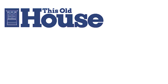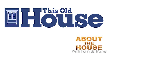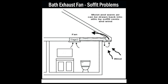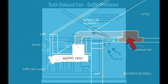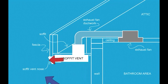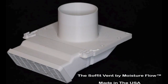Since 1991, Tom Silva from This Old House, Henri de Marn from About the House, and Alex Schutz from Insta Installation — these three icons realized the problem costing homeowners billions of dollars each year due to improper venting of bathroom exhaust fans. According to these experts, architects, and engineers, properly venting through the soffit is the most efficient and cost-effective way of venting an exhaust fan to the exterior.